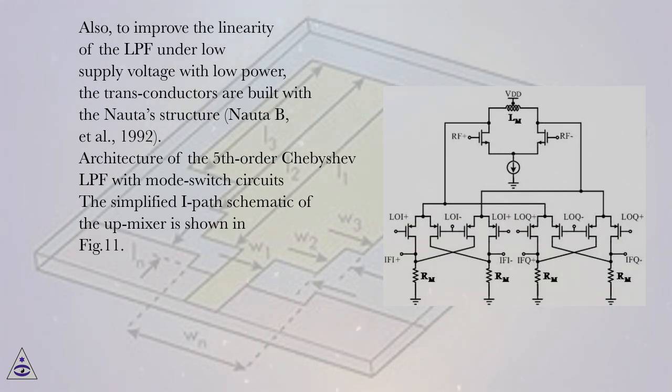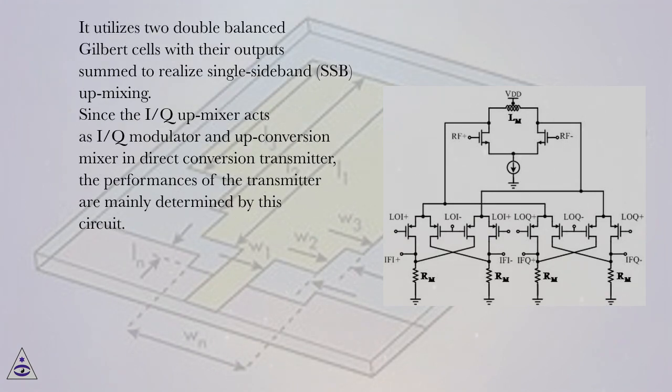Architecture of the 5th-order Chebyshev LPF with mode switch circuits. The simplified I-path schematic of the up-mixer is shown in FIG.11. It utilizes two double-balanced Gilbert cells with their output sum to realized single-sideband, SSB, up-mixing.